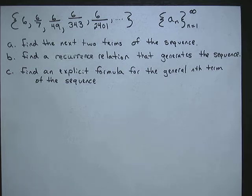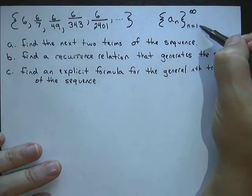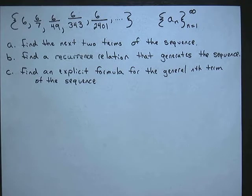In this problem, we're given the sequence of numbers 6, 6 over 7, 6 over 49, 6 over 343, 6 over 2401, dot dot dot, and we're told that it goes from n equals 1 to infinity, and we're asked to first find the next two terms of the sequence.